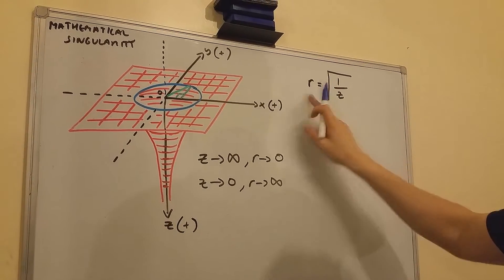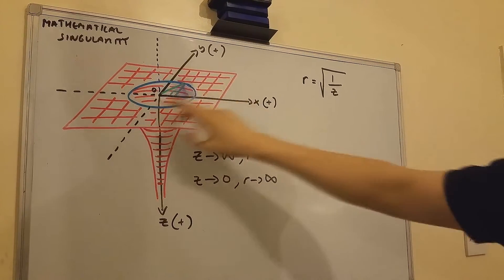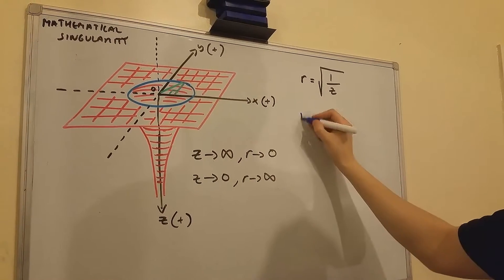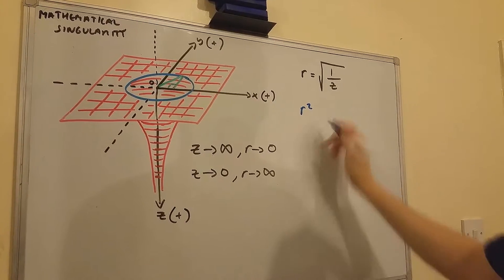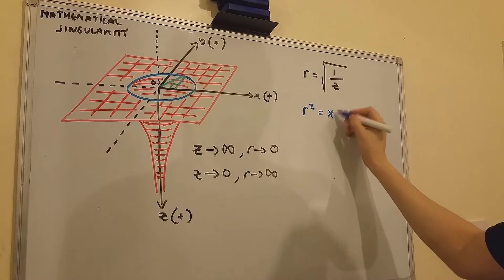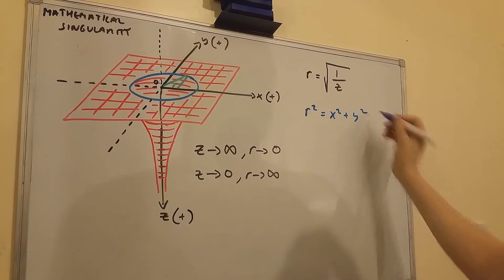Now this r is related to these concentric circles. We know that r squared is equal to x squared plus y squared.